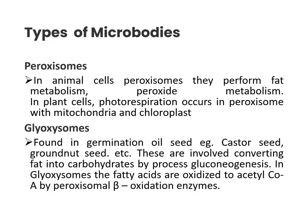There are three types of microbodies: peroxisomes, glyoxysomes, and spherosomes. Peroxisomes are present in both animal and plant cells, while glyoxysomes and spherosomes are only found in plant cells. Peroxisomes are found in almost all eukaryotic cells. In animal cells they perform fat metabolism and peroxide metabolism; in plant cells, photorespiration occurs in peroxisomes together with mitochondria and chloroplasts, and they contain enzymes that oxidize molecules like fatty acids and amino acids.